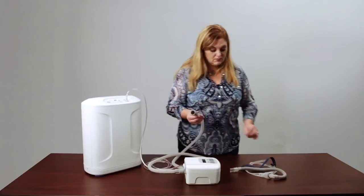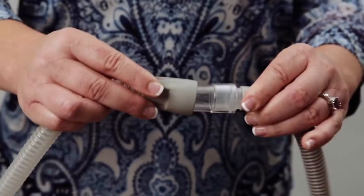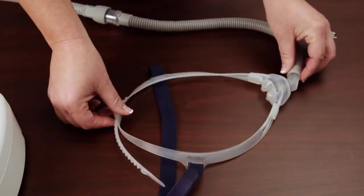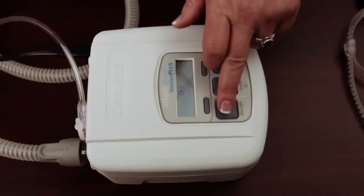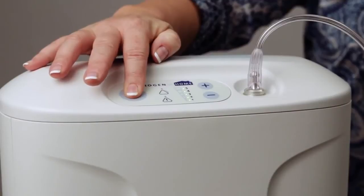Connect the other end of the CPAP tubing to the mask. The oxygen will flow in through the adapter along with the air pressure from the CPAP machine. Turn on the CPAP unit first and then turn on the oxygen concentrator.